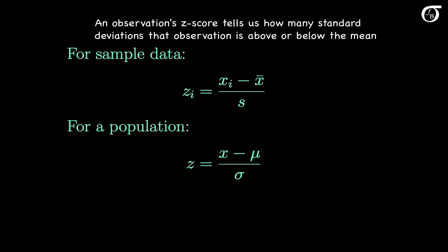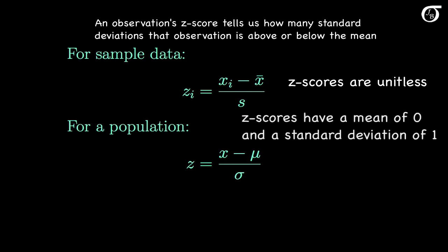A couple of things to take note of: the numerator and denominator have the same units, and so those units will always cancel out, so a z-score is a unitless quantity. And since we are subtracting the mean and dividing by the standard deviation, we are forcing the z-scores to have a mean of 0 and a standard deviation of 1.